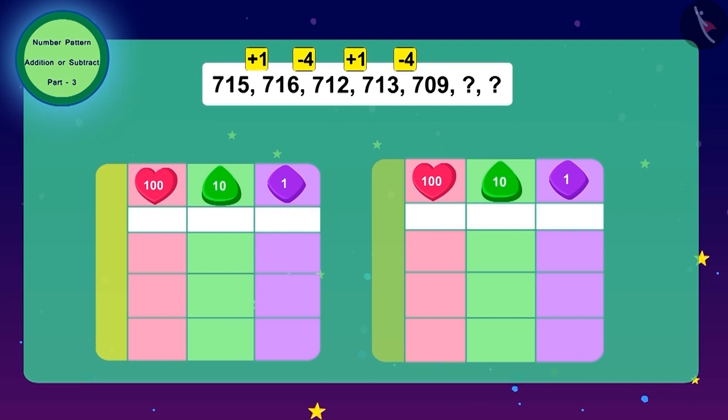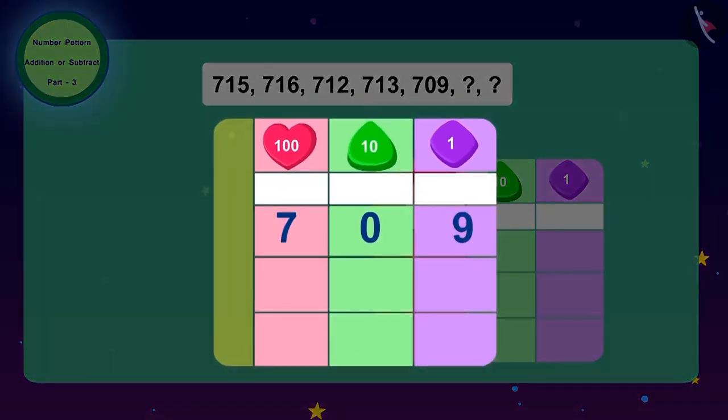So, to get the next number, what should Raju do? To get the next number of the code, we have to add one to 709. How much is it?